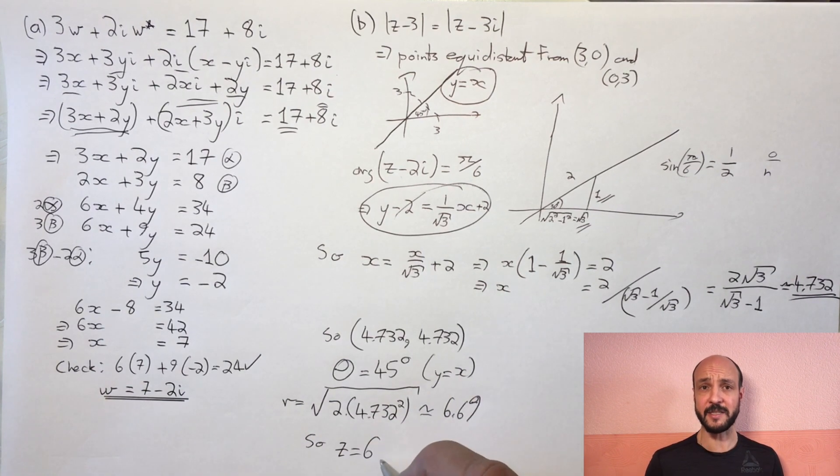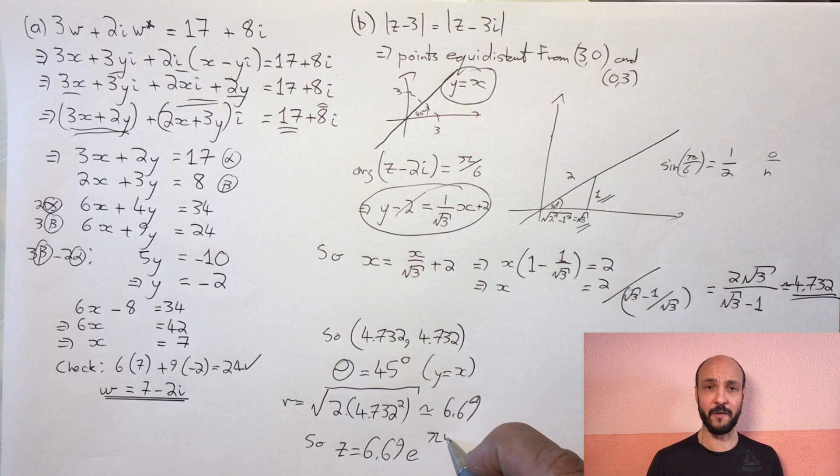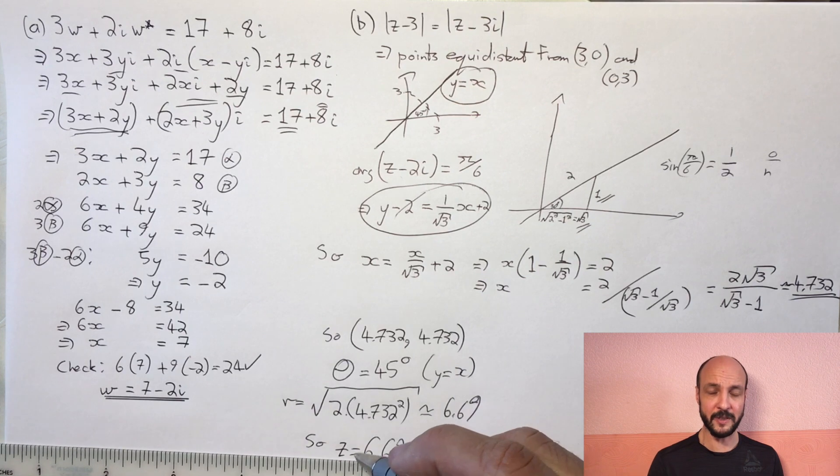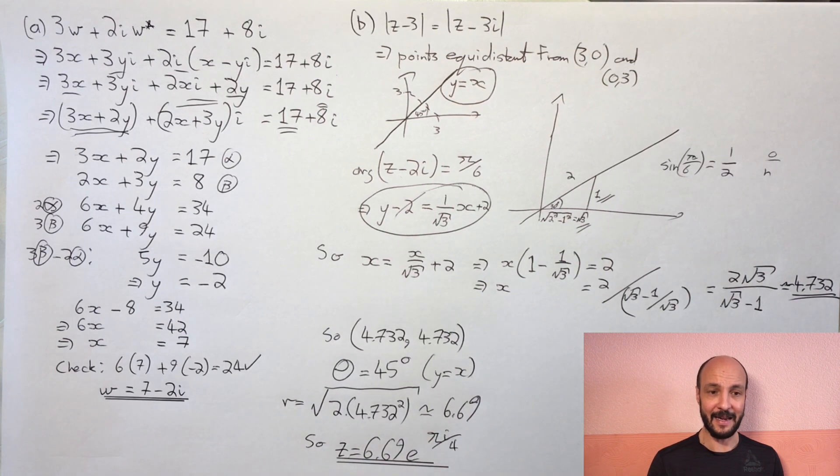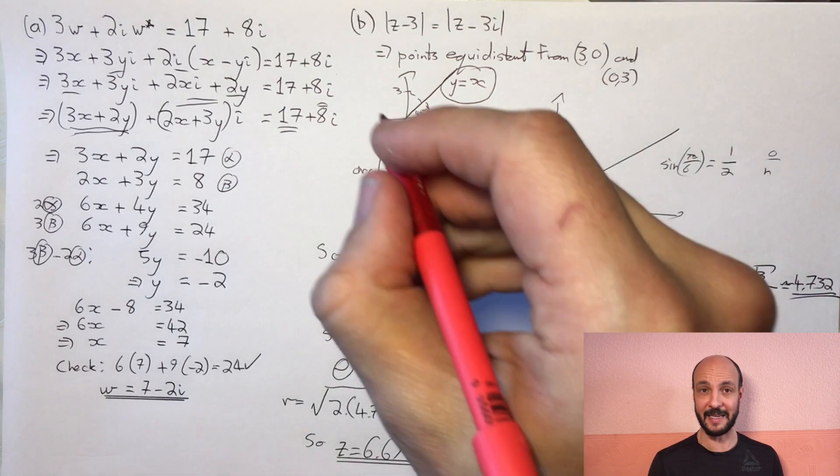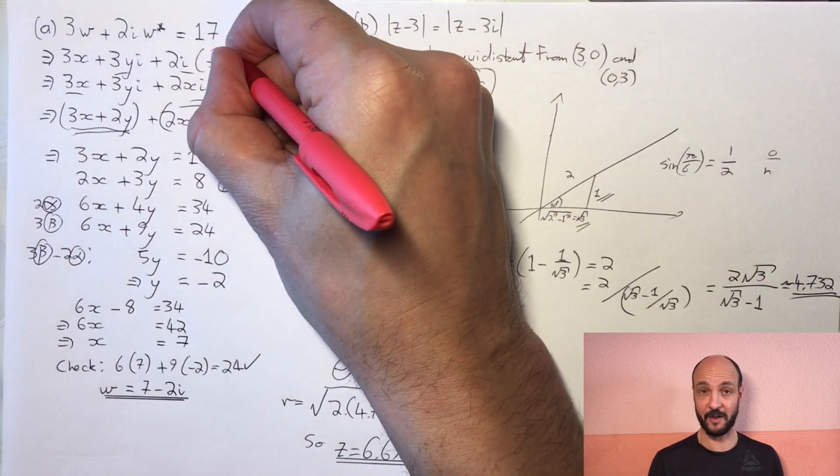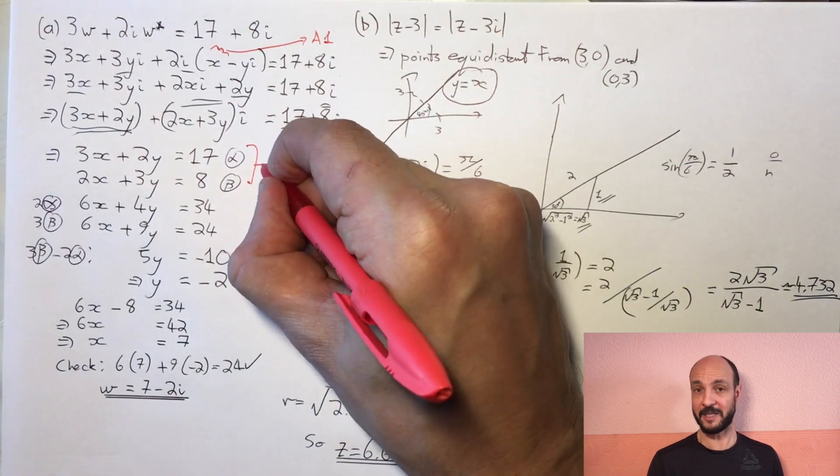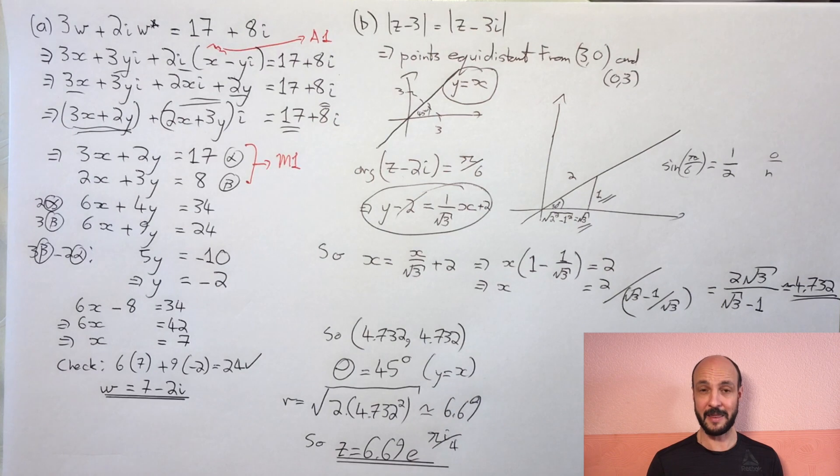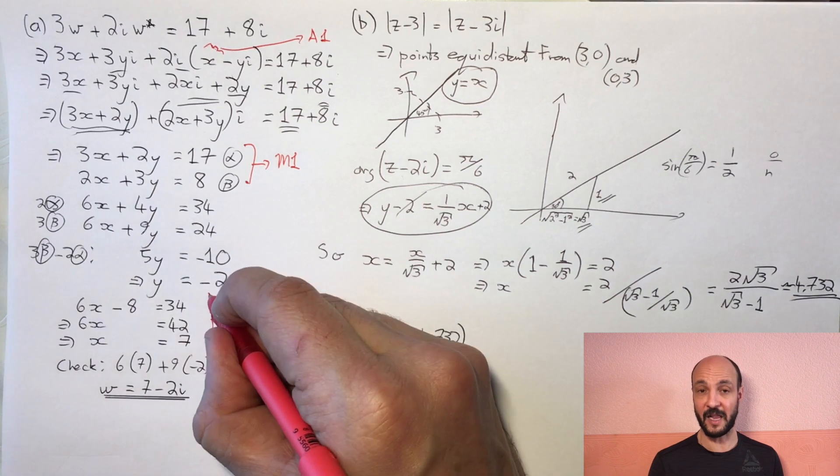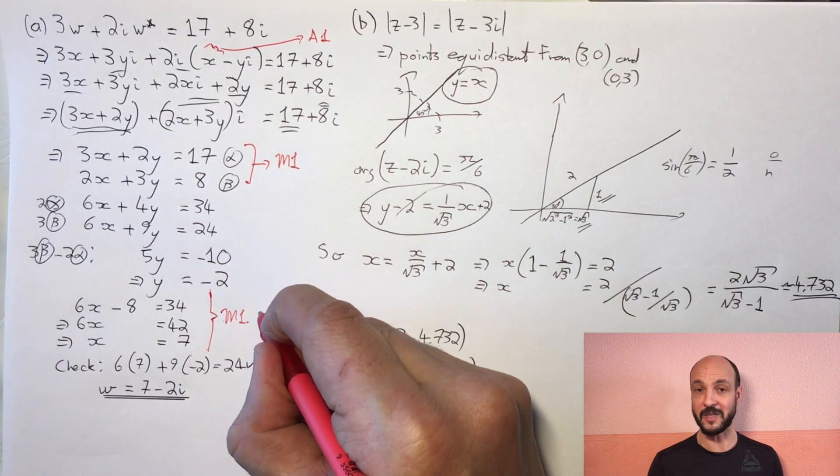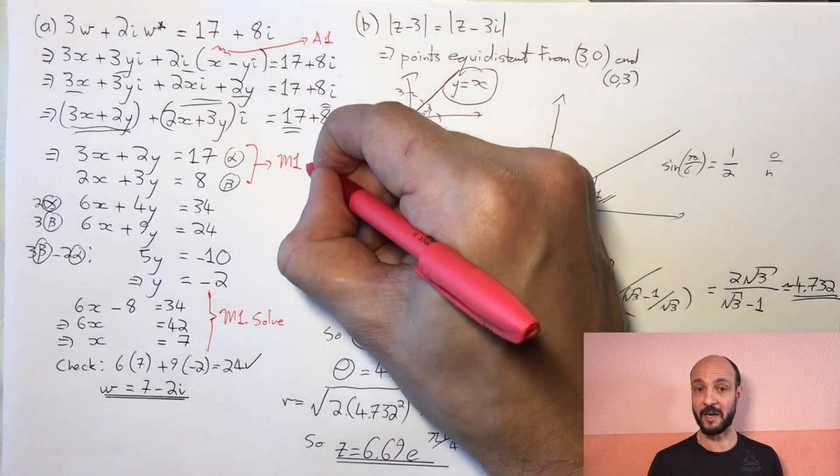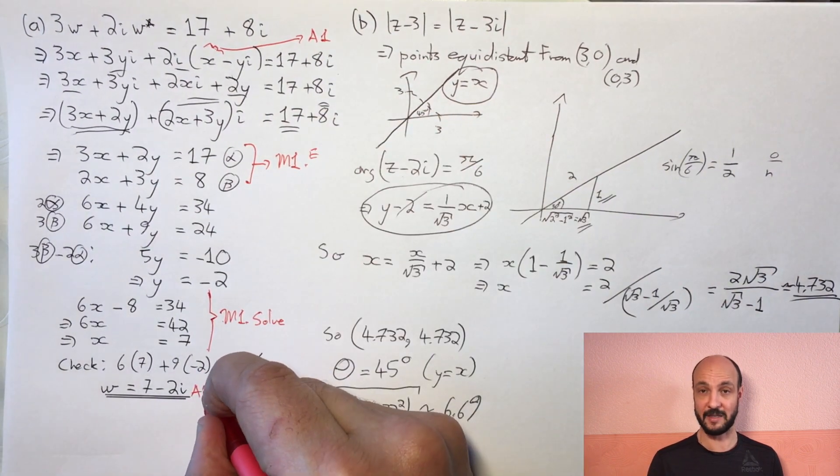So let's go through and think of where the marks are assigned. We get a first accuracy mark on the first question for putting in our x plus yi into the left-hand side, and even before we multiply that, just for putting in the x plus yi at x minus yi there, for knowing that our conjugate is x minus yi. Then we get a method mark for splitting out the real and imaginary parts to make a system of two equations. That's a method mark. They don't have to be the correct numbers. We get another method mark for solving those equations to get a value of y and a value of x. Again, a method mark. The numbers don't have to be correct. Then a final accuracy mark if we end up with the correct answer of 7 minus 2i, so four marks altogether.